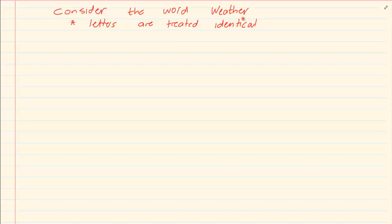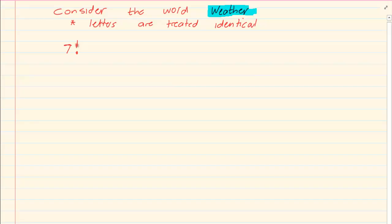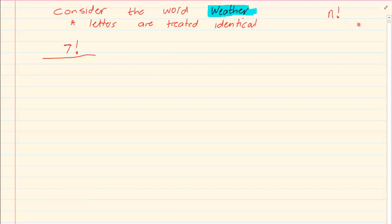Now let us take the following question. If I give you the word WHETHER, the letters are treated as identical. We have 7 letters, so that is the factorial of 7. When letters are treated as identical — meaning we have repeated letters like two E's, two F's, or three G's — then it would be N factorial over the repeated letters factorial.